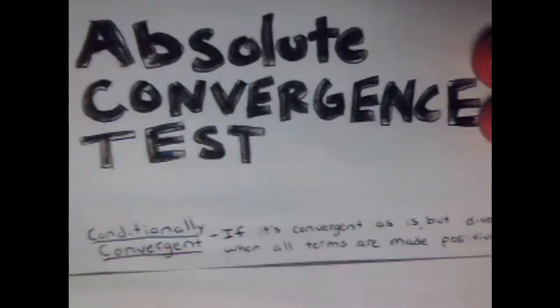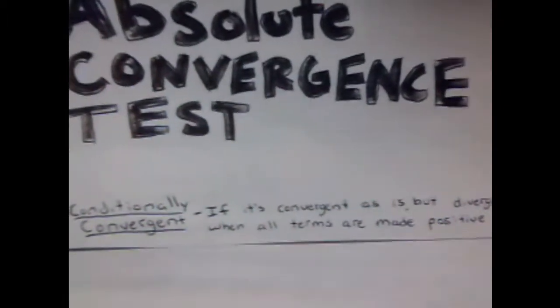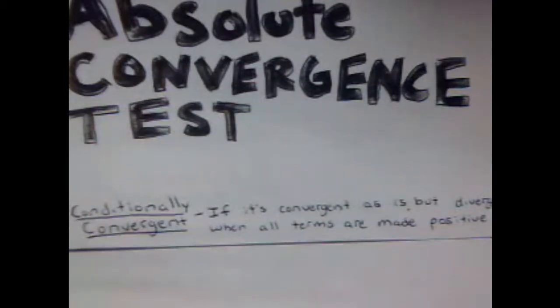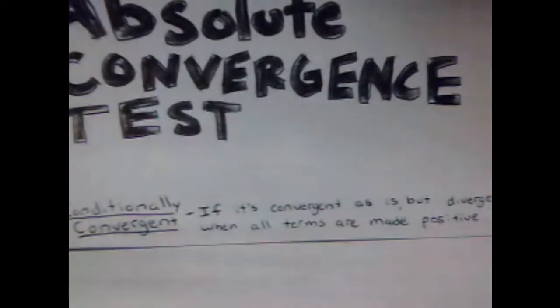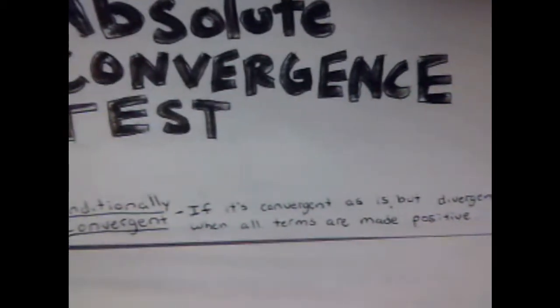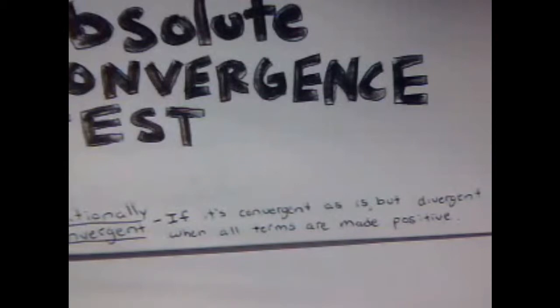The first possible outcome is Conditionally Convergent. If it's Conditionally Convergent, then it's going to be convergent as-is. You do a normal convergence test, and if it converges, then it will be at least Conditionally Convergent.